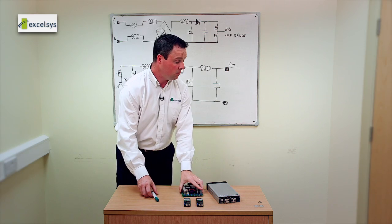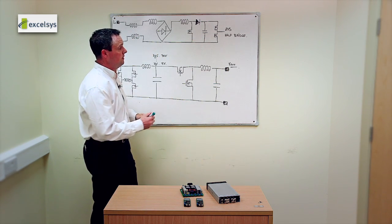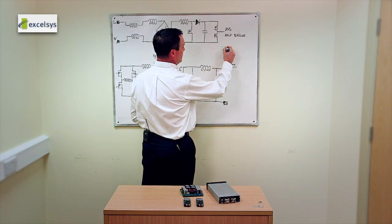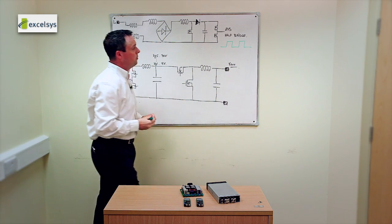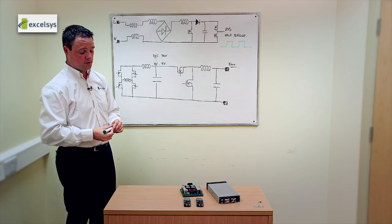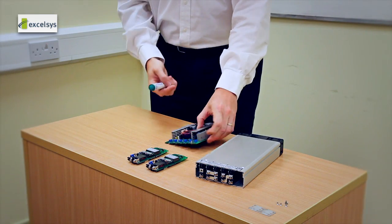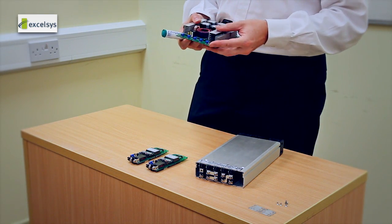We then take a bridge rectifier and we rectify the mains and we boost the voltage to approximately 380 volts. From then, we have a zero volt switch in which we generate a fixed duty cycle of 50%, plus and minus 185 volts. And this is what we use to power each of the individual power mods.